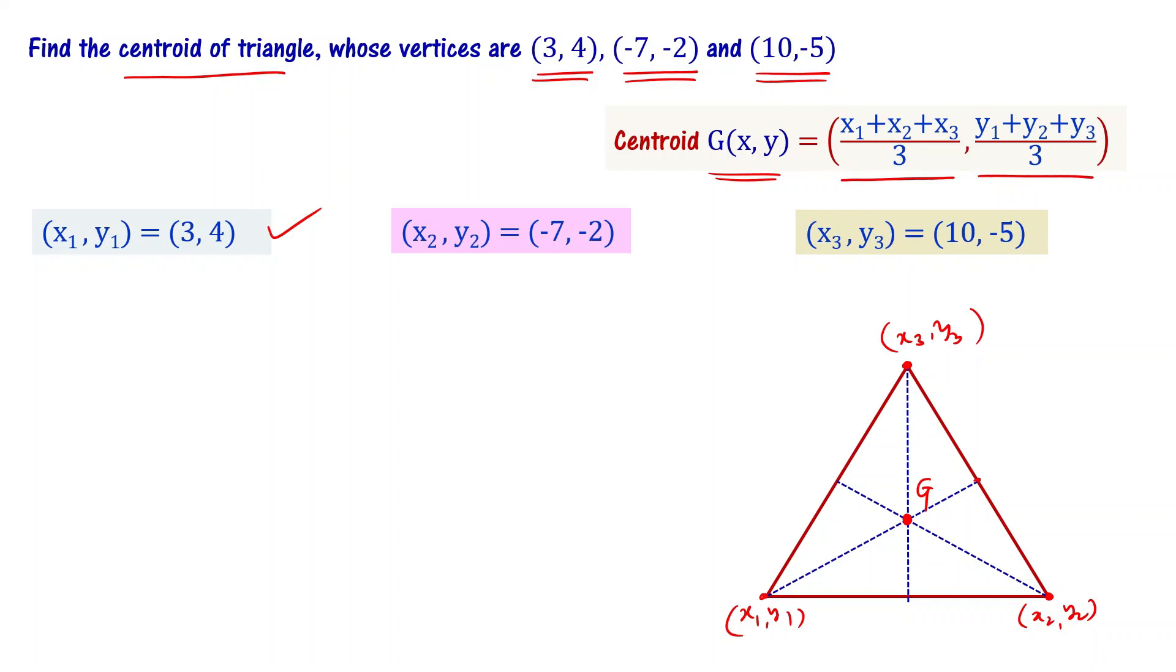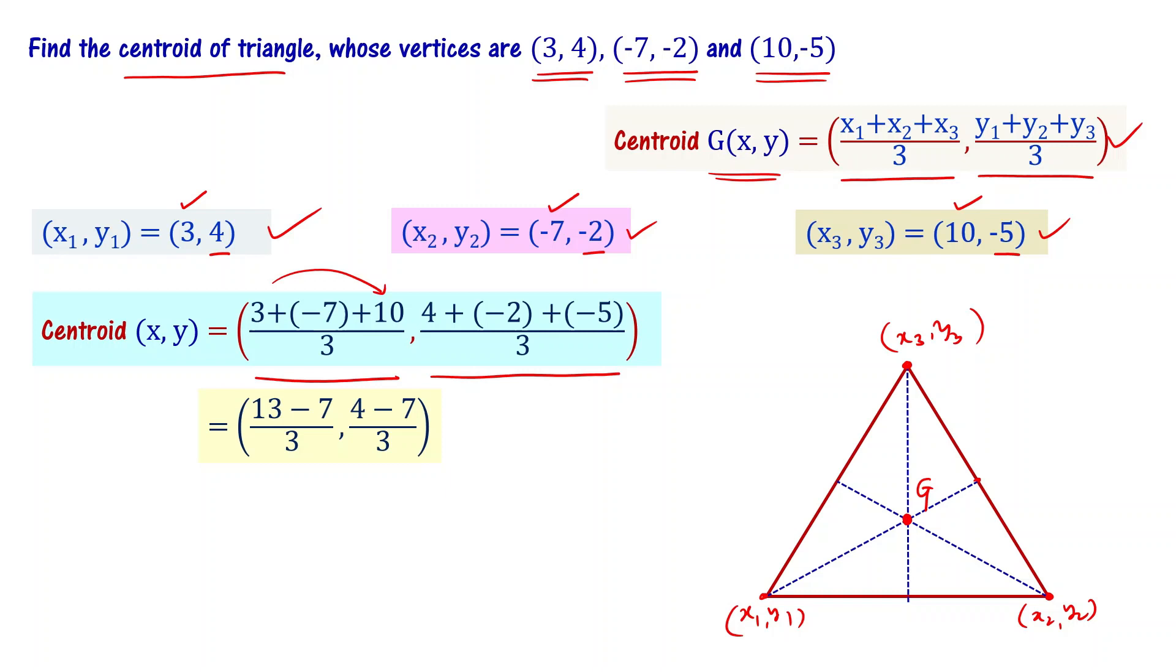We can substitute all these numbers into this formula to get the centroid. Centroid equals ((3 + (-7) + 10)/3, (4 + (-2) + (-5))/3), which equals (6/3, -3/3), which simplifies to (2, -1). So the centroid of the triangle whose vertices are given is (2, -1).